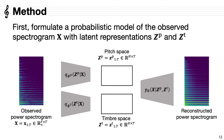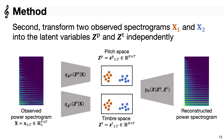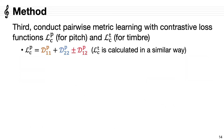Now I explain the flow of our method. First, we formulate a probabilistic model of the observed spectrogram with latent representations. This is an ordinary VAE with two independent latent variables. Second, we transform two observed spectrograms into the latent variables independently, so each space has two latent samples. Third, we conduct pairwise metric learning for these two latent samples with contrastive loss functions.